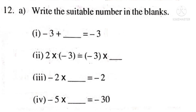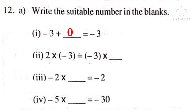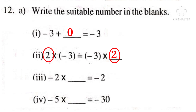Now, 12a. Write the suitable number in the blanks. Problem 1: observe the number minus 3 on left hand side and also on right hand side — there is no change. It is only possible when it is added to the number 0. So, 0 is the answer. Problem 2: 2 into minus 3 is equal to minus 3 into dash. The products are equal and the number minus 3 appears on both sides. So, in the blank, 2 must be there, because it is the commutative property under multiplication.